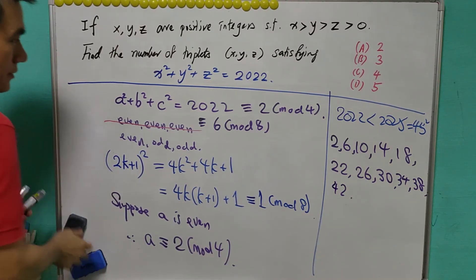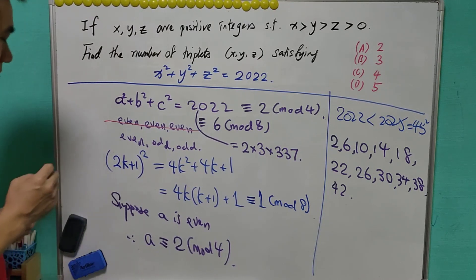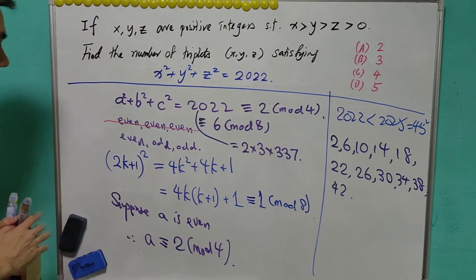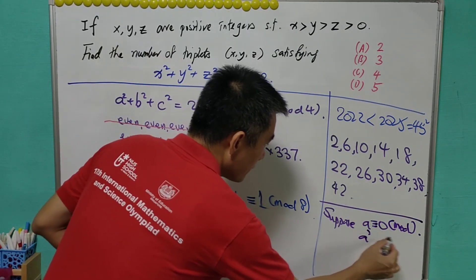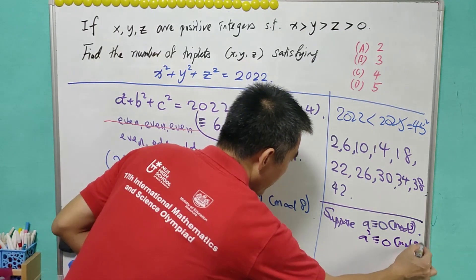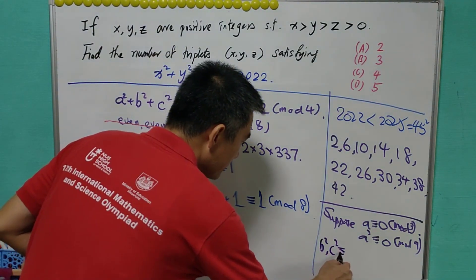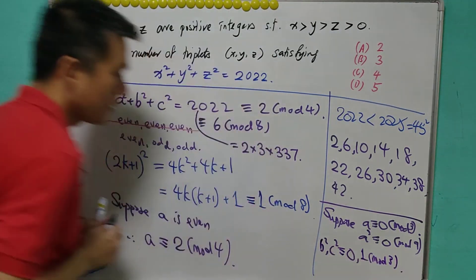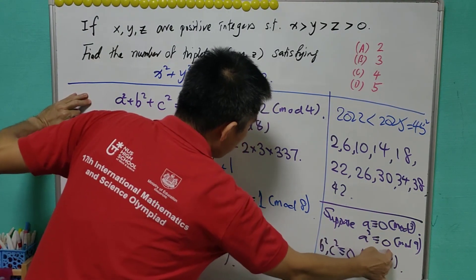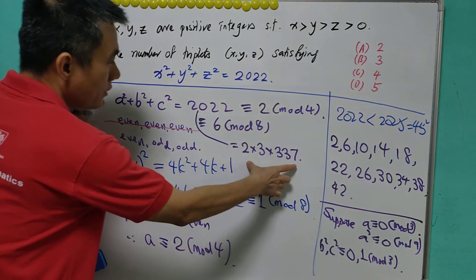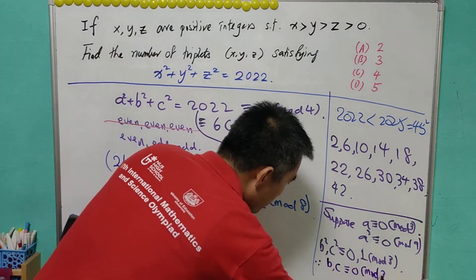One more thing that we can see is 2022 is also equal to 2 times 3 times 337. And now we claim that if a is an even number, it cannot be a multiple of 3. Suppose a is a multiple of 3, then a square is multiple of 3, then a square will be a multiple of 9. For any integer, the square of itself is either congruent to 0 or 1 mod 3. So if a is a multiple of 3, then it will be congruent to 0 mod 9 and also 0 mod 3. Then the sum of it is actually a multiple of 3, meaning that b square and c square must also be a multiple of 3. So this will mean that b and c itself must be a multiple of 3.